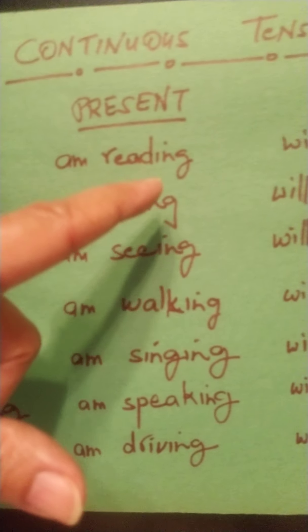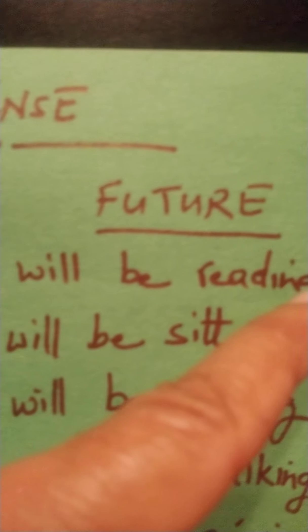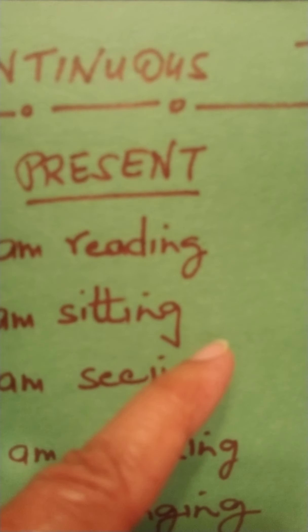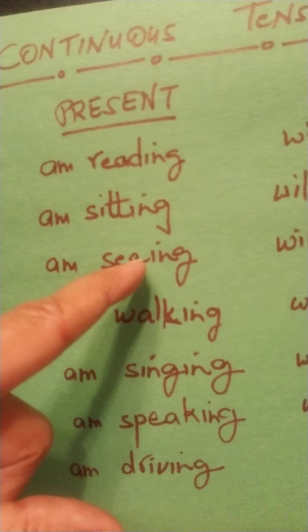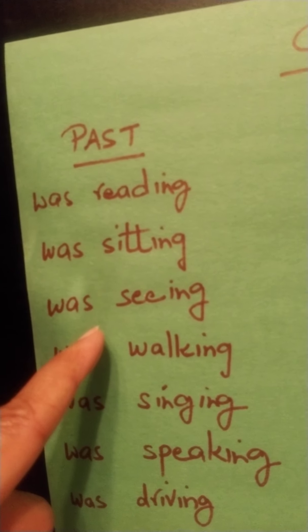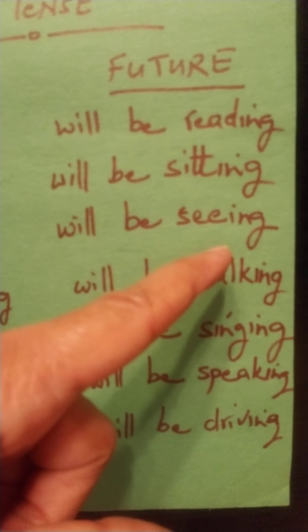I am reading the book now. I was reading the book yesterday. I will be reading the book tomorrow. Tomorrow means kal; yesterday is also kal. I am sitting. I'm sitting on the chair now — this means ki hun ho rea hai. I was sitting on the chair yesterday. I will be sitting on the chair tomorrow — bhavishya, future.